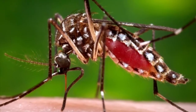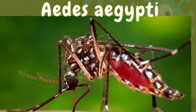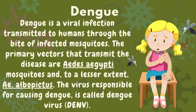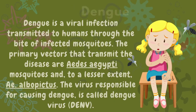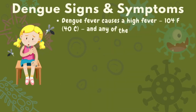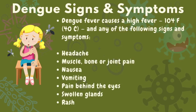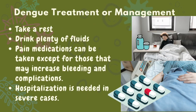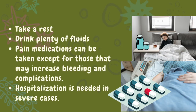Have you been bitten by a mosquito? Be careful — it might carry the dengue virus. Dengue is a viral infection transmitted to humans through the bite of an infected mosquito. These are the signs and symptoms of dengue. Treatment includes taking rest, drinking plenty of fluids, and pain medications — except for those that may increase bleeding and complications.